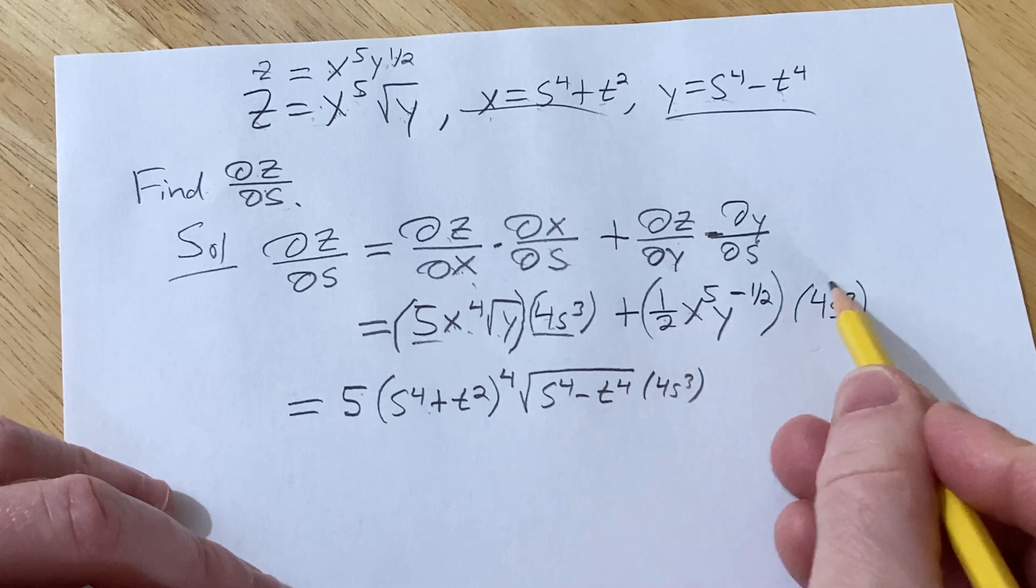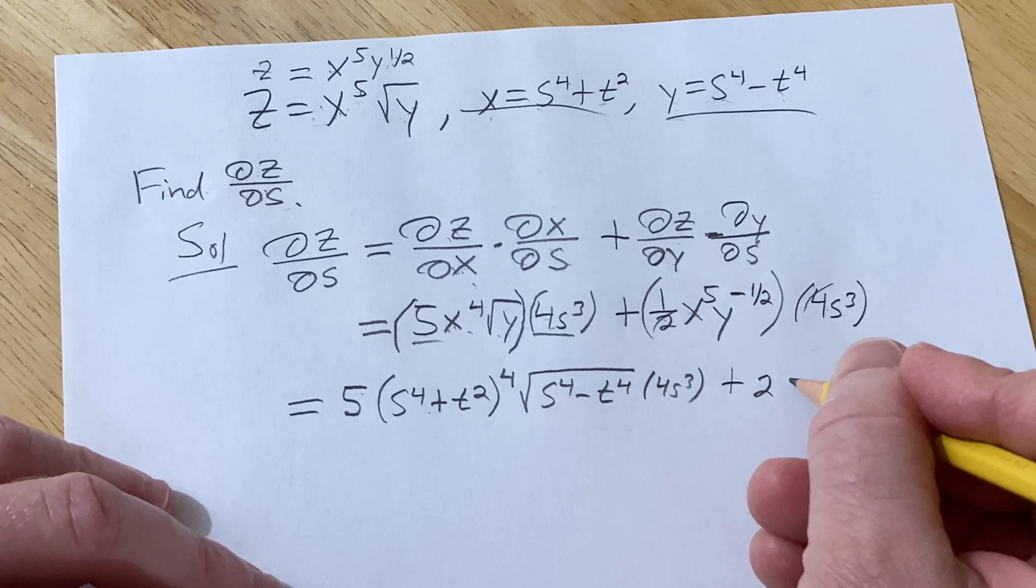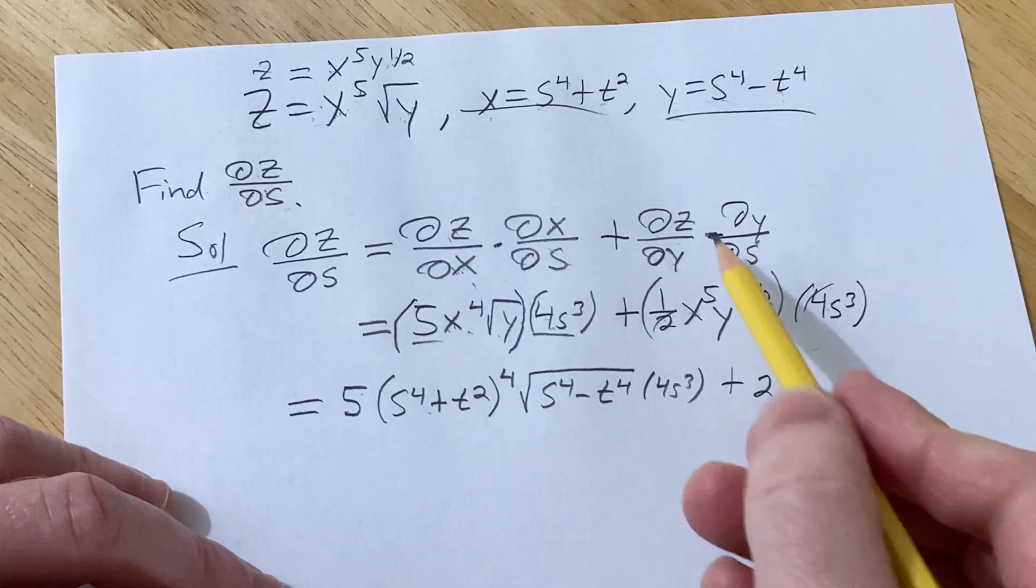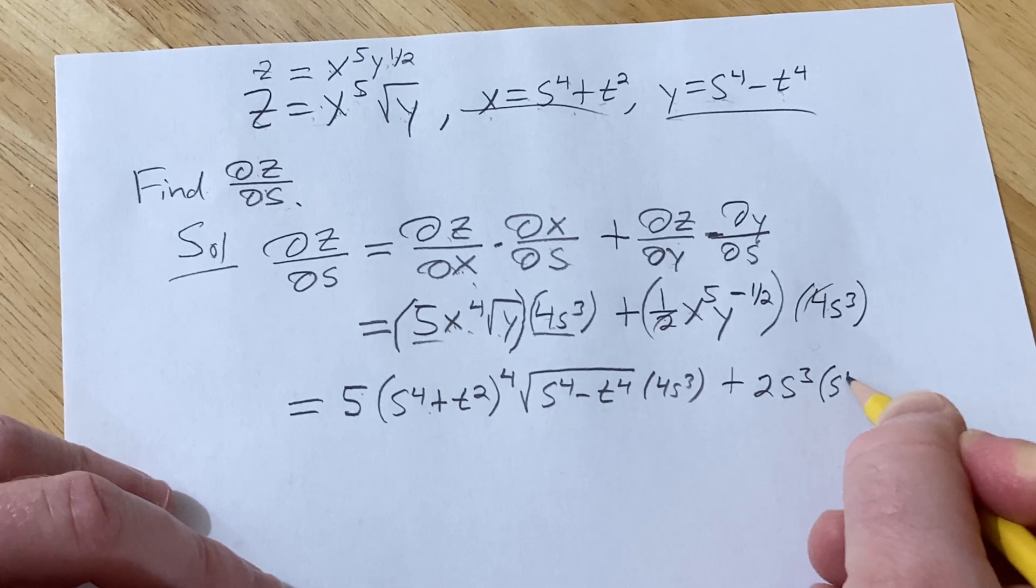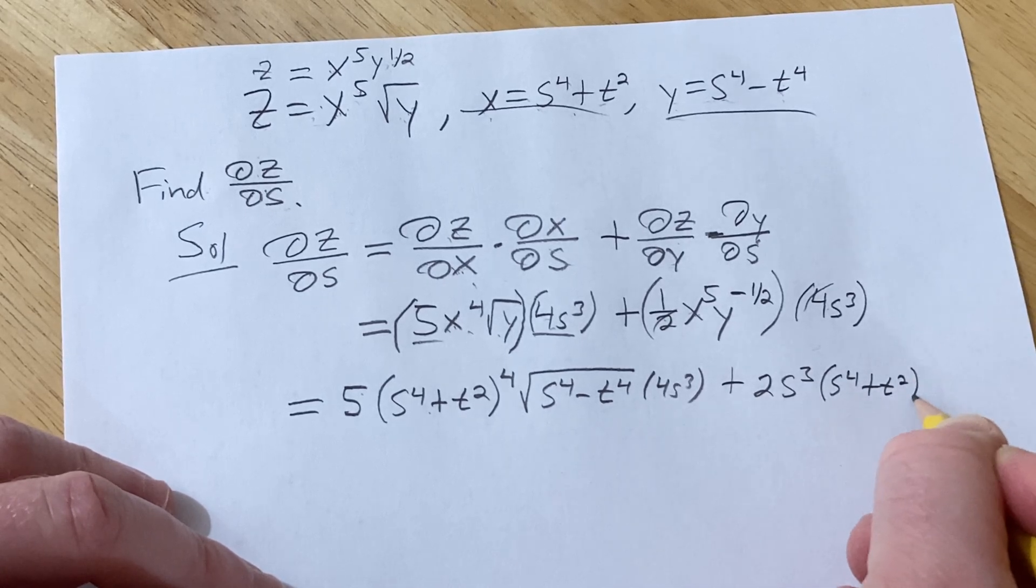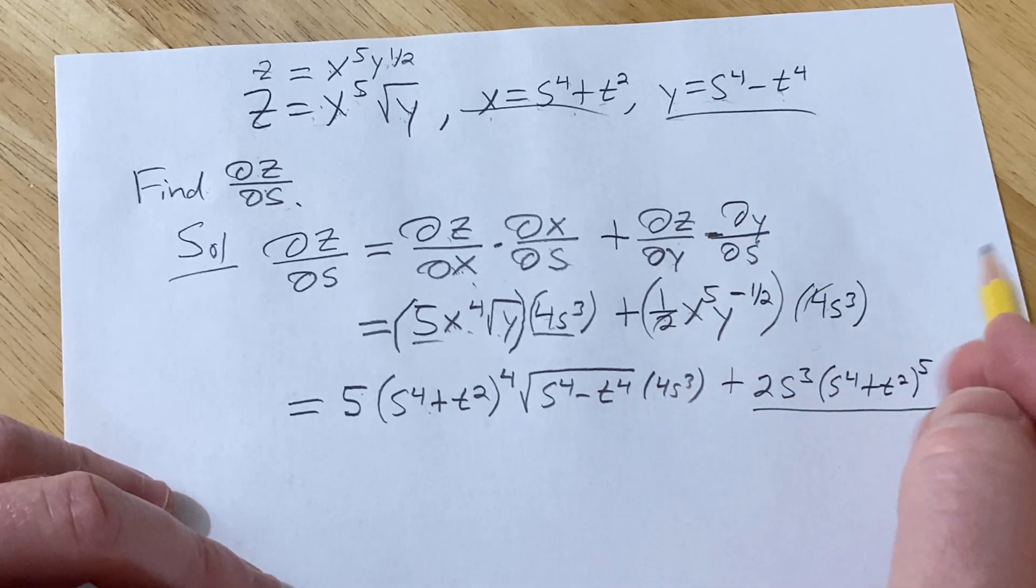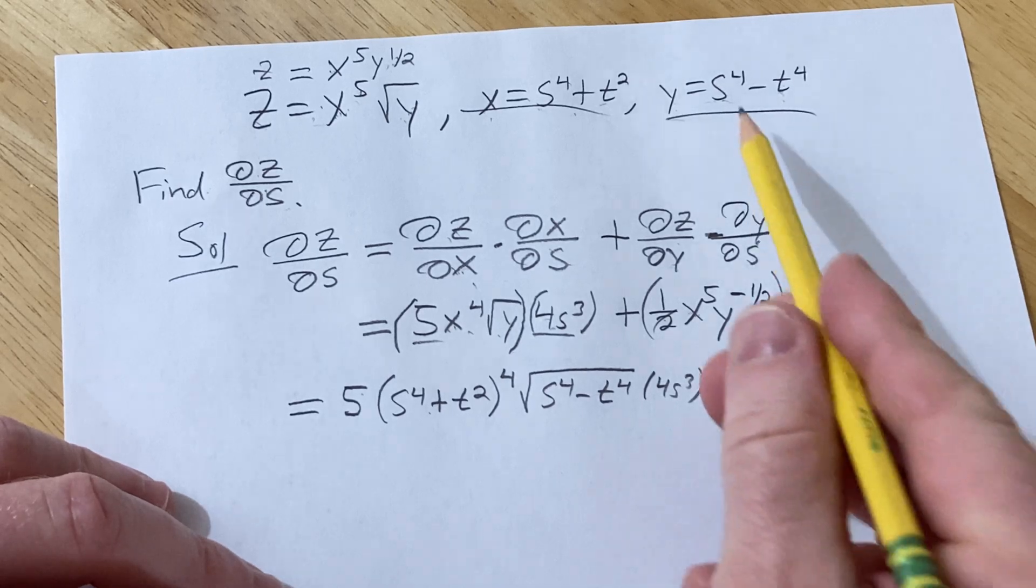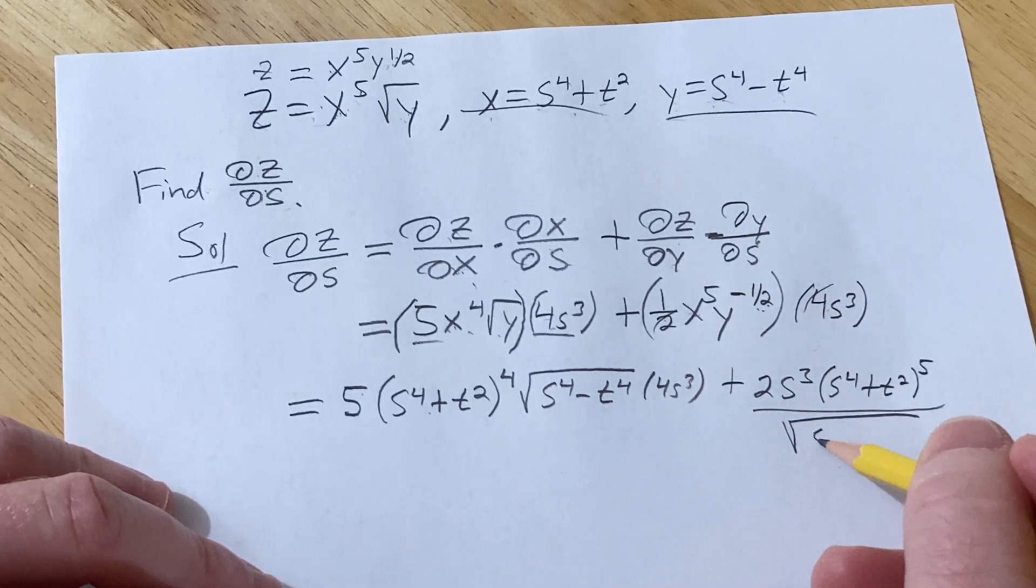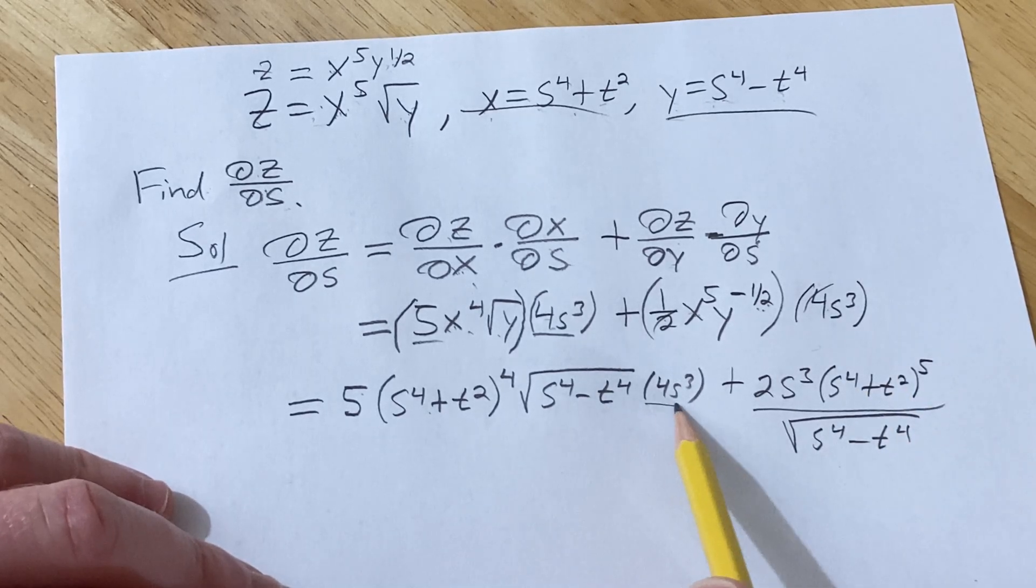Here we have these can cancel so I'll put the two in the front. So plus 2s cubed. x is this so it'll be parentheses s to the fourth plus t squared to the five, and then y is this. So I'm going to bring it downstairs and make it a square root because it's a negative one half. So it'll come downstairs and become a positive one half. And so we have s to the fourth minus t to the fourth.